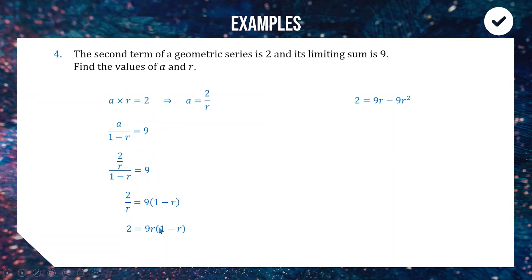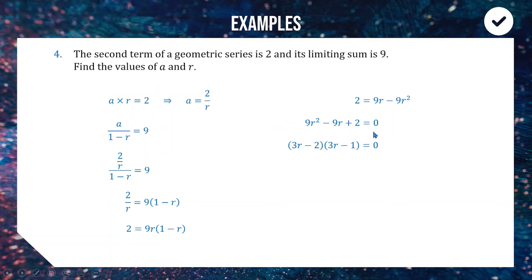Expanding the right hand side gives 9r − 9r². Rearranging everything to one side: 9r² − 9r + 2 = 0. I've set this equal to zero because with a quadratic you can factorize or use the quadratic formula. Factorizing this non-monic trinomial gives (3r − 2)(3r − 1) = 0, so r = 2/3 or r = 1/2.